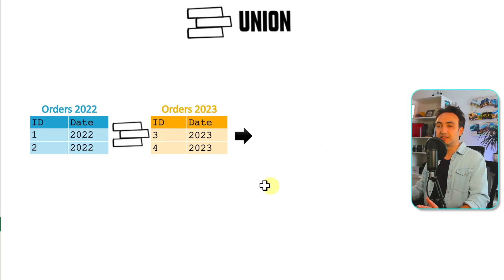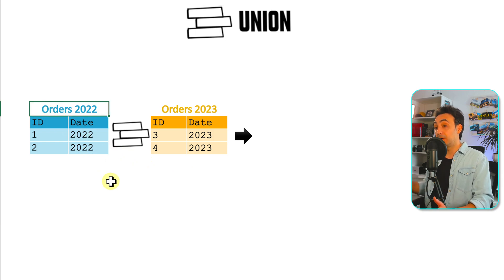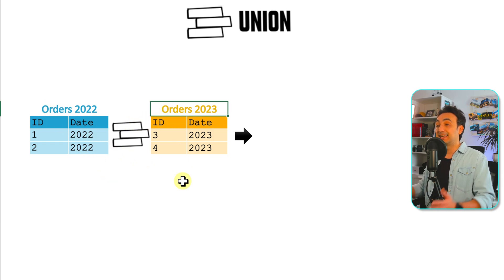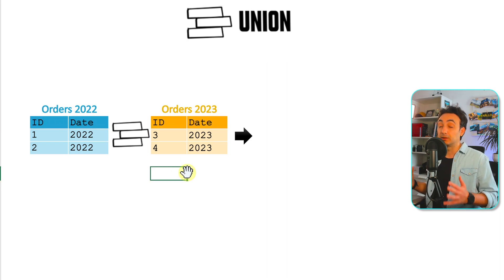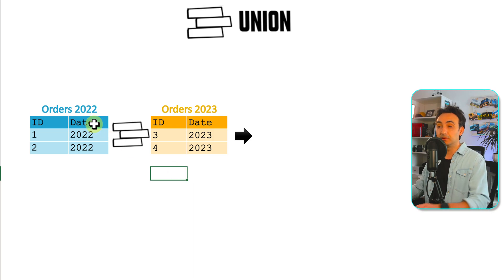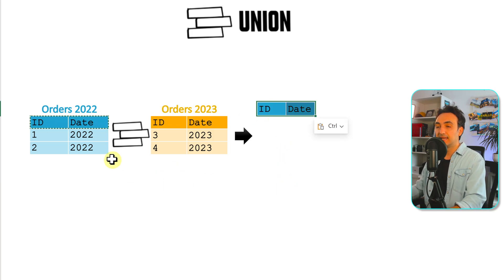Let's look at a simple example. We have two tables: orders of 2022 and orders of 2023. Both tables have exactly the same structure — two columns, id and date. It makes sense to merge them into one table called orders. If we do a union, it starts from the left table and takes the fields first — the id and date.